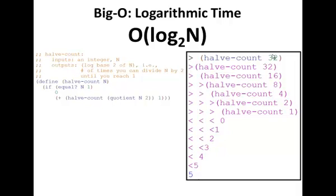We can also see ones that are logarithmic time, log base two of n. I have the function halve count here. We'll be talking more about that in later lectures, but what it does is it divides the magnitude of the input by two each time, so it's always cutting its input in half.